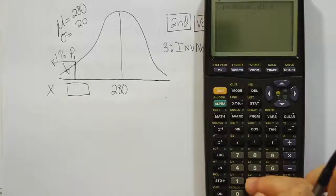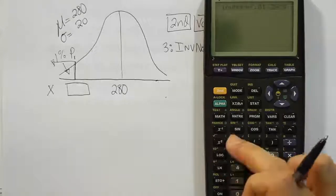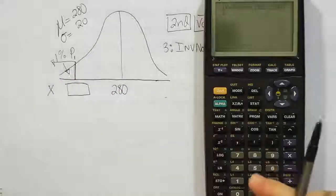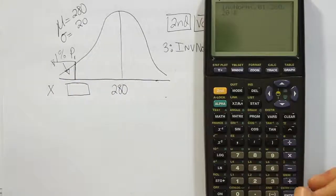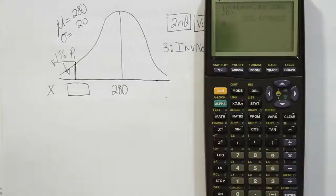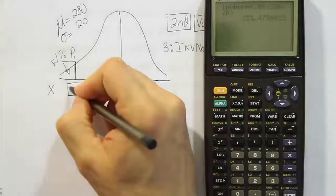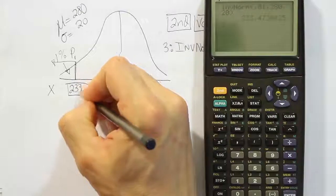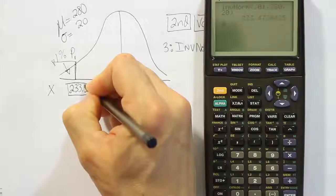Then we're going to enter the mean which is 280, the standard deviation which is 20. Close it up, press enter, and we find the result 233.5.